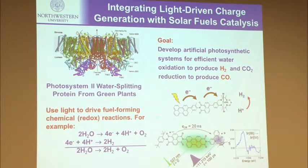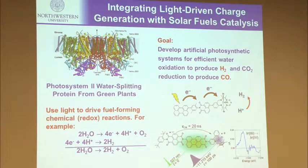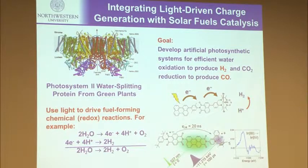Briefly, our catalysis efforts are designed to split water to produce hydrogen — oxygen is a byproduct — and to reduce carbon dioxide to carbon monoxide, producing synthesis gas or syngas as a feedstock for chemical processes. You can essentially make the chemical world out of syngas using existing technology. We've generated molecular complexes that demonstrate proton reduction and water splitting, and we published work using the APS to do time-resolved X-ray absorption spectroscopy to identify key intermediates in the catalytic cycle of a water splitting catalyst.